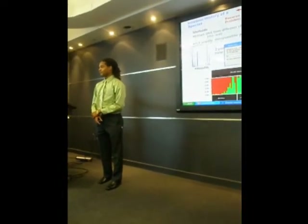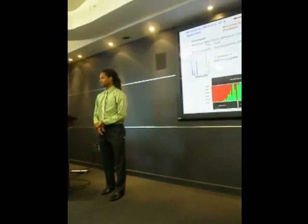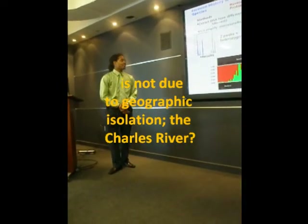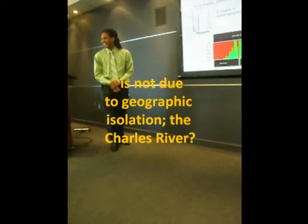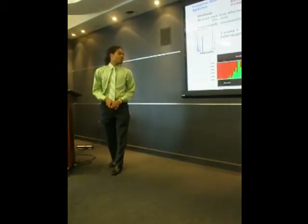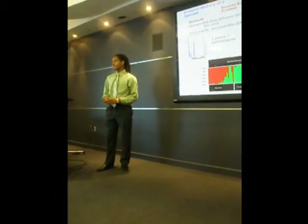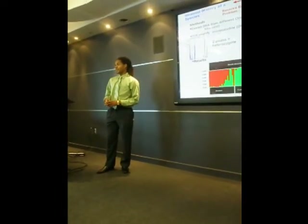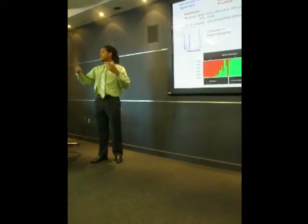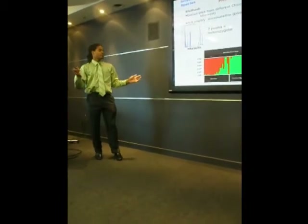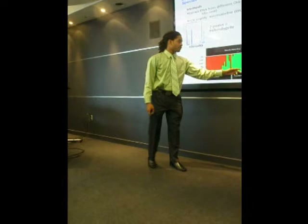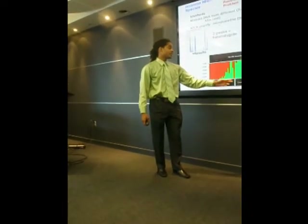Audience question: How do you know that when you get these kinds of differences, that it isn't just isolation by distance — like they're on the other side of the river? Response: That is a good question. What we know about chicory is that it is a diploid and self-incompatible. The Charles River is still within the same geographic area.